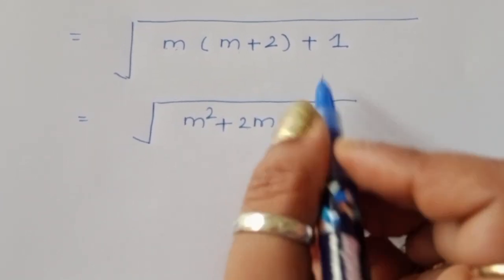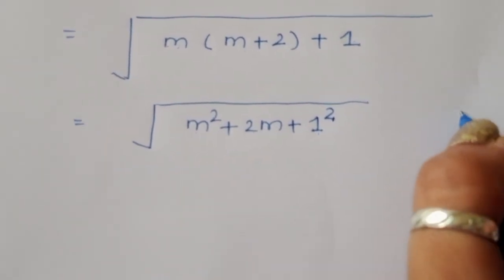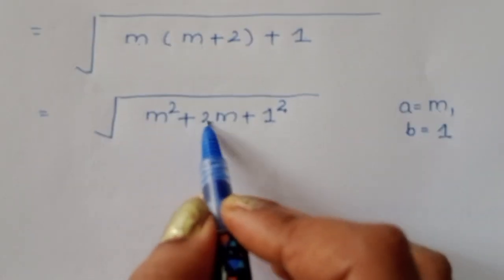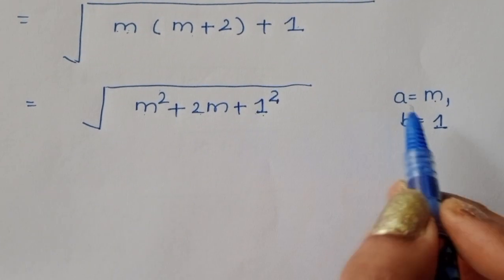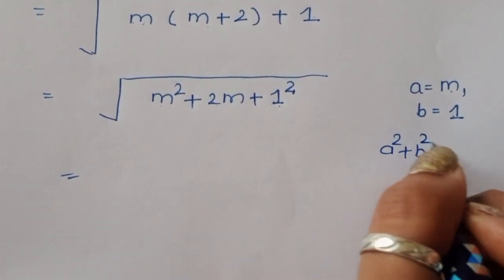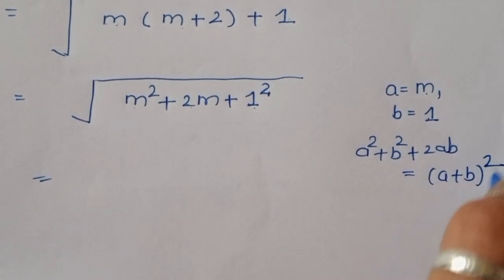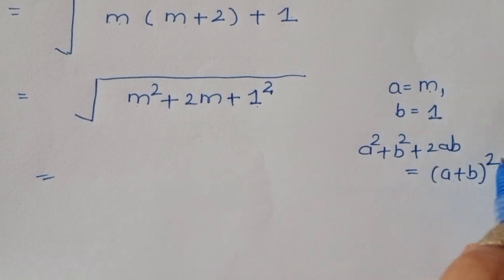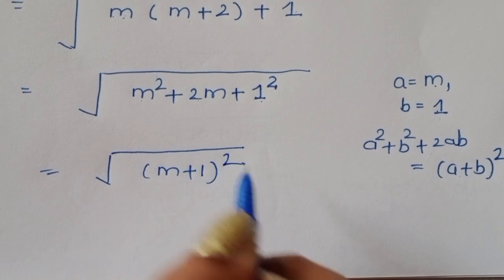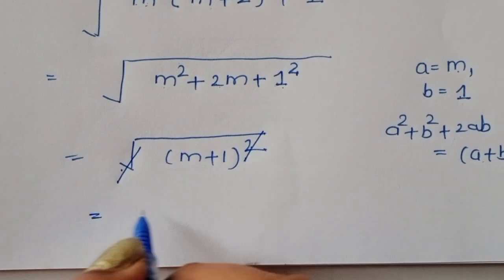Now m squared plus 2m plus 1 is of the form a squared plus 2ab plus b squared, where a equals m and b equals 1. This equals (m plus 1) whole squared. Since we have a square root of a perfect square, the square root and the square cancel, leaving m plus 1.